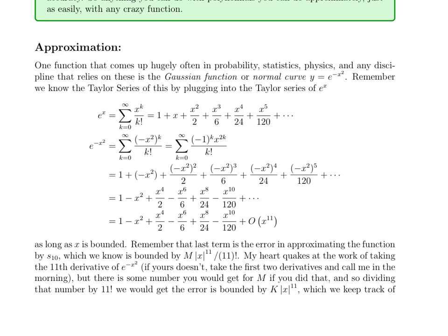So here's one start. All over probability, statistics, physics, one deals with what's called the Gaussian function, or the normal curve, which is some multiple of e to the minus x squared. So first off, you can get the Taylor Series of e to the minus x squared from the Taylor Series of e to the x by plugging minus x squared in to the exact same series. So we get the sum: e to the x is the sum of x to the k over k factorial. So e to the minus x squared is the sum of minus x squared to the k over k factorial. Rule of exponents tells you that's minus 1 to the k times x to the 2k over k factorial.